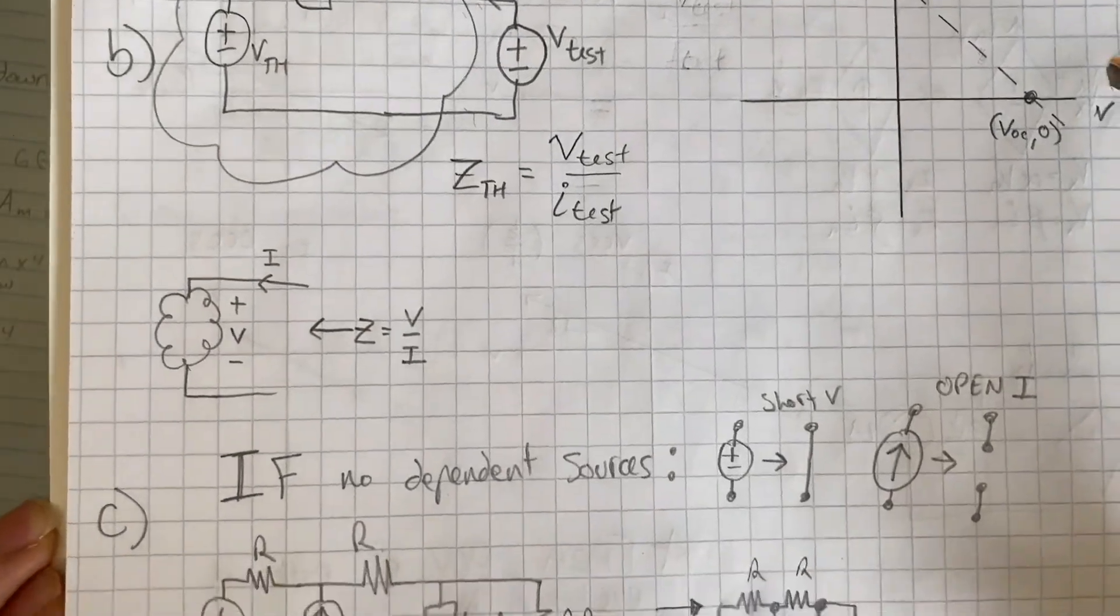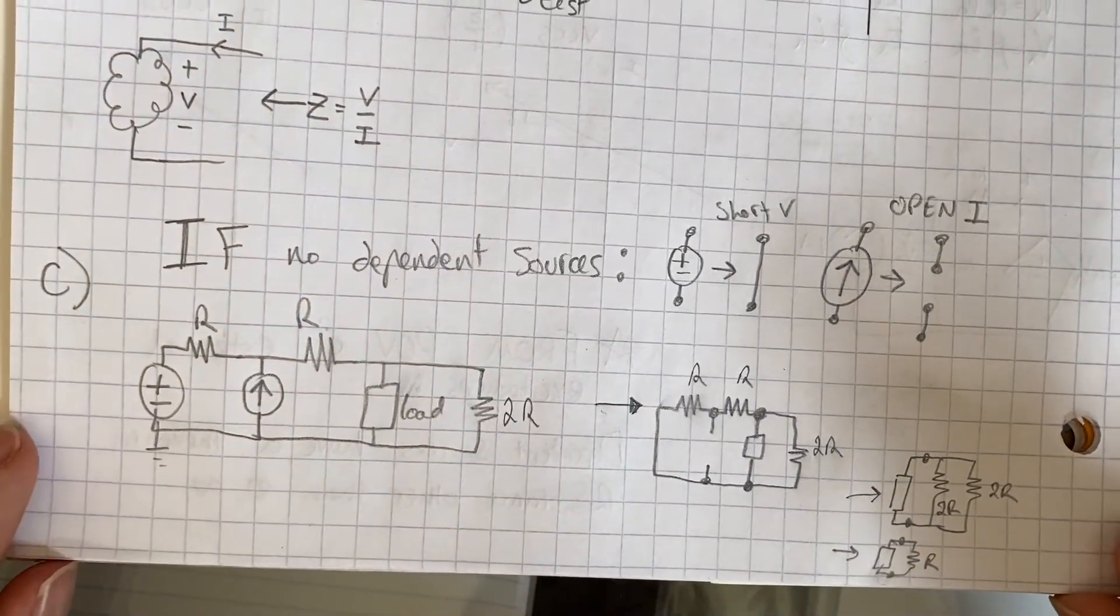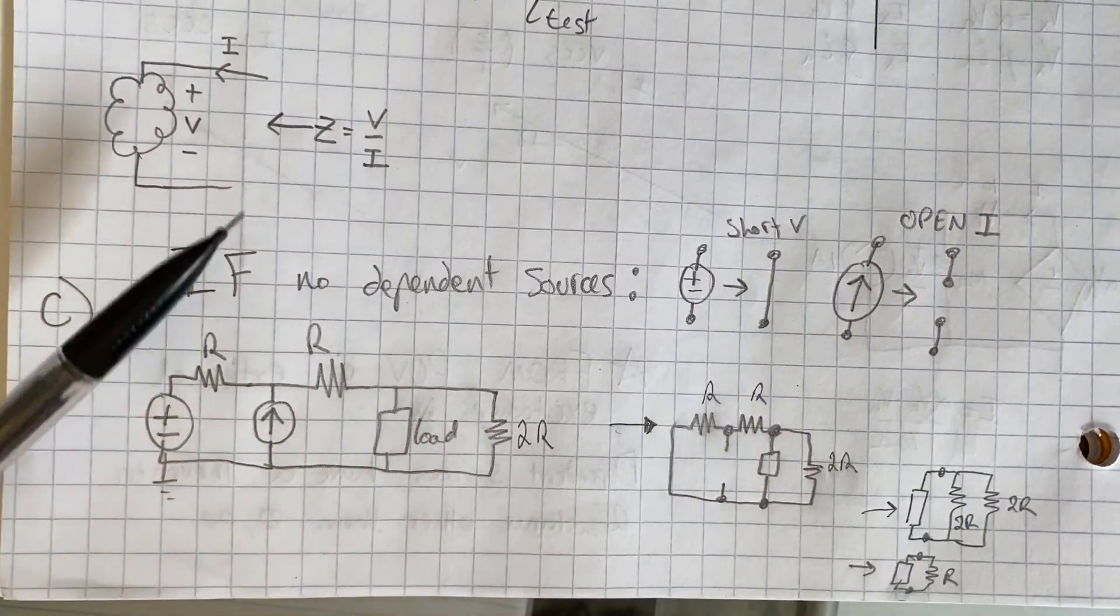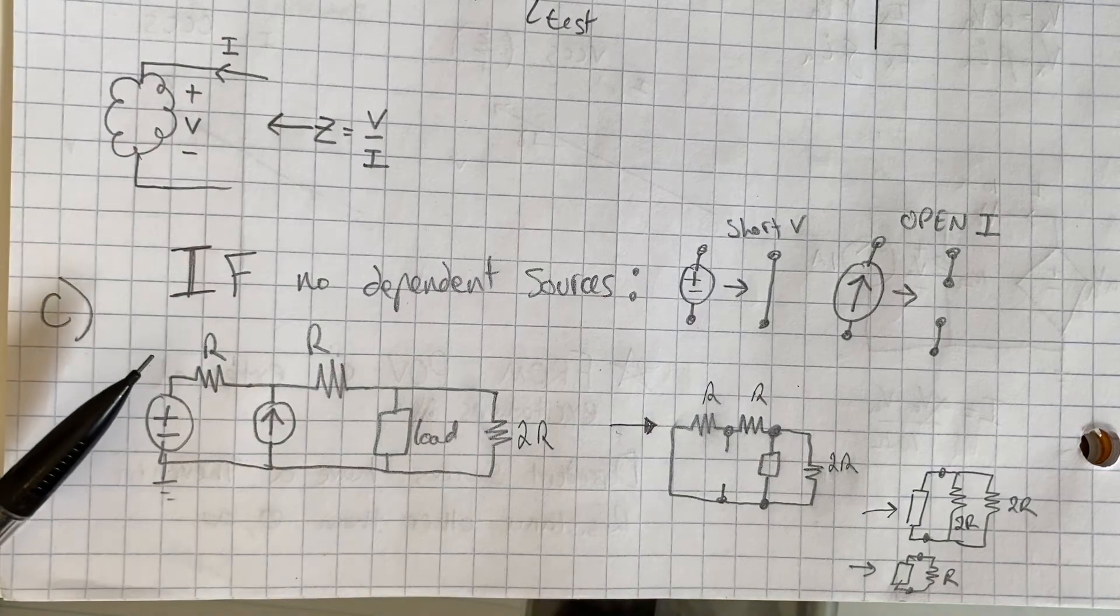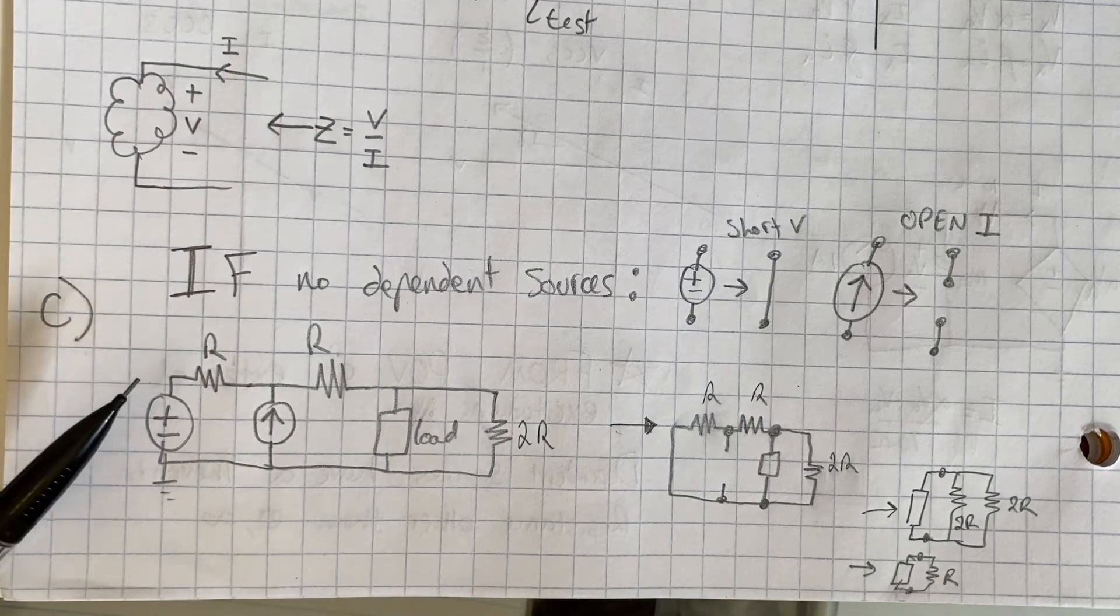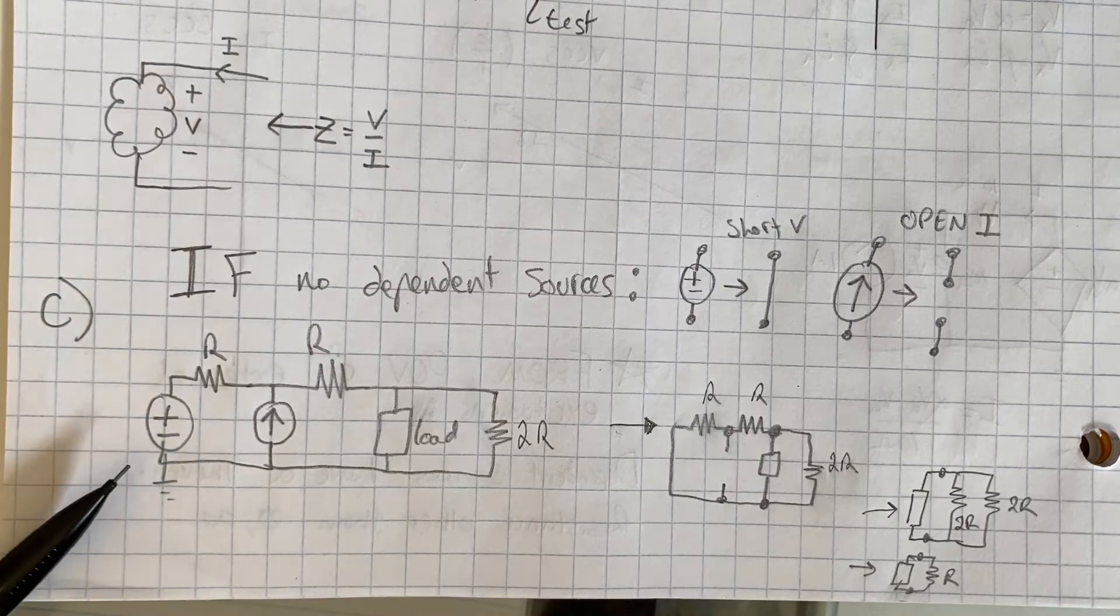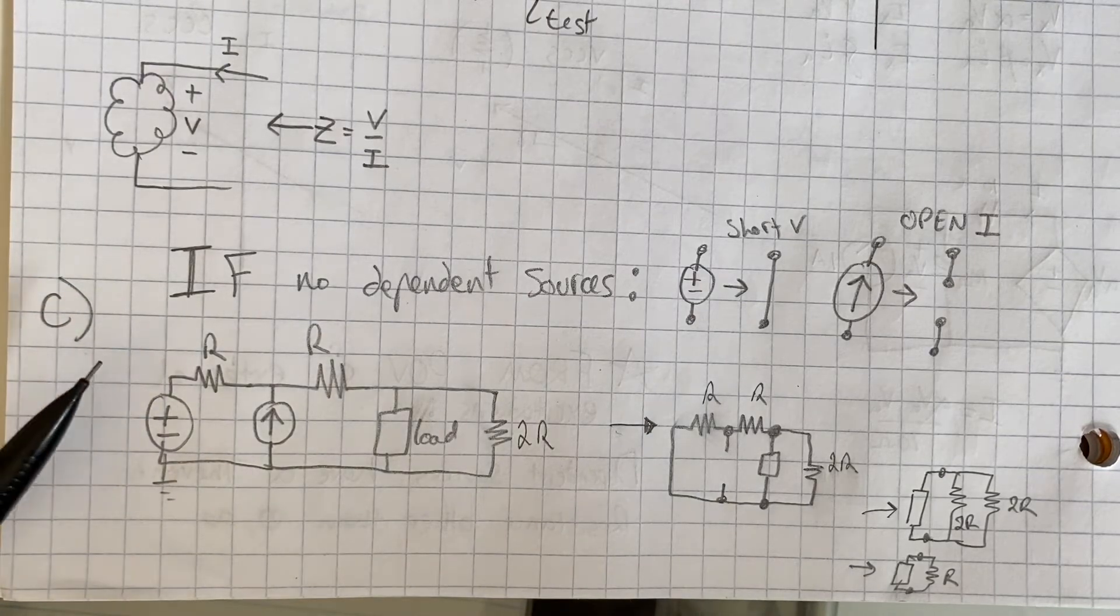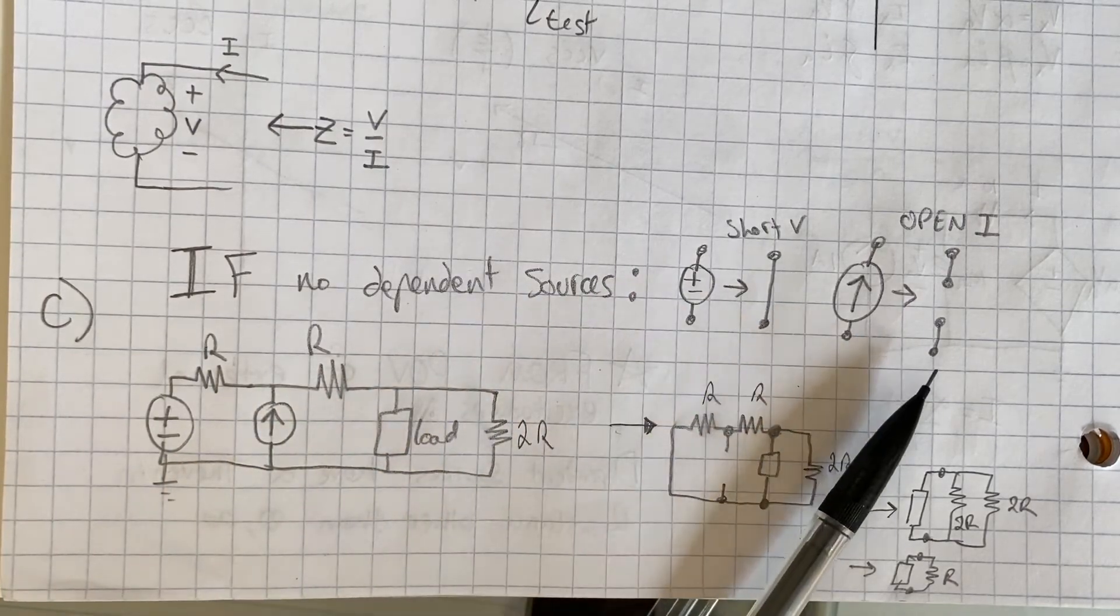And the third way to find the Thevenin impedance is if there are no dependent sources. Notice, remember my last video about dependent sources and how networks see them. We said they kind of act as resistors so that we can't just ignore them when talking about how other components see them. But for independent sources, we can short out the voltage sources and open all the current sources.